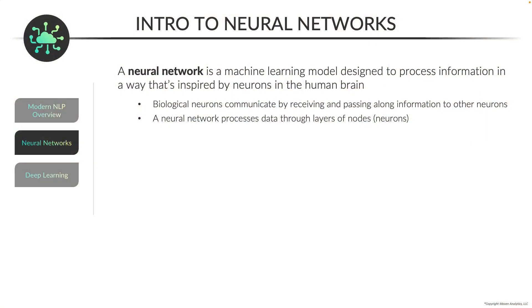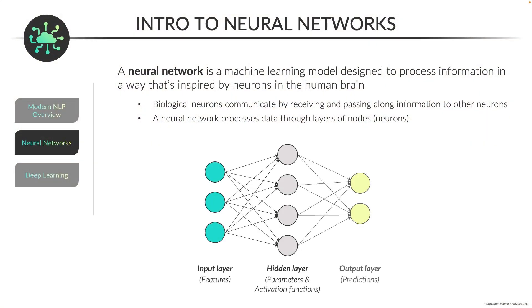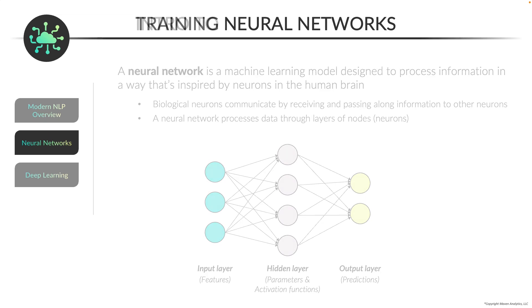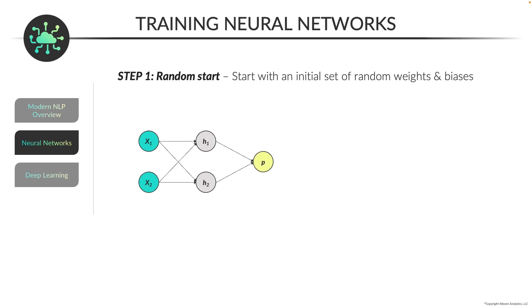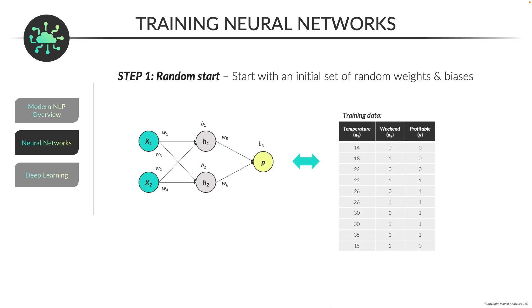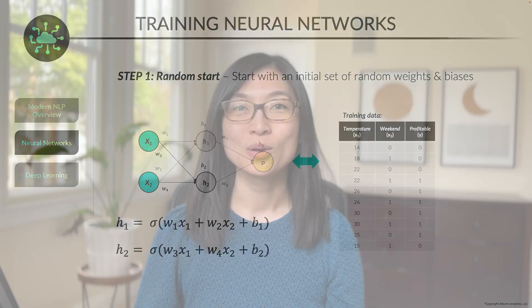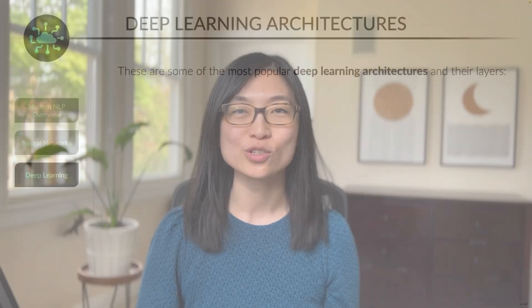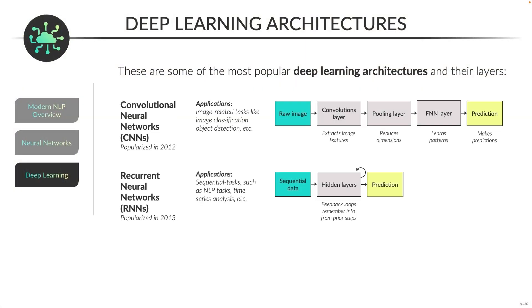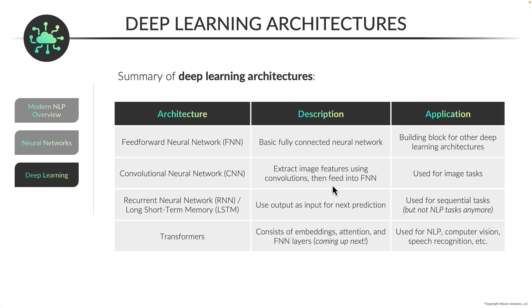Once you have a solid understanding of the foundational NLP concepts, we'll move on to the second half of the course on modern NLP techniques, which covers the major advancements in NLP over the past decade. We'll start with the basic building blocks of modern NLP, which are neural networks. You'll learn how neural networks are trained and become familiar with key terms like layers, nodes, weights, and activation functions. We'll also introduce you to popular deep learning architectures like CNNs, RNNs, and LSTMs, and their practical applications.